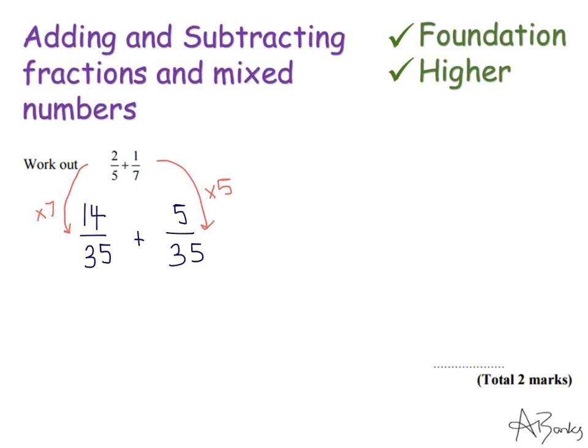And now I've got 2 fractions that have the same denominator, I can add them together quite simply because I've got 14 thirty fifths, and then I get another 5 thirty fifths. Well, in total, I've got 19 thirty fifths. So we keep the denominator the same and just add together the numerators. That's important as well.